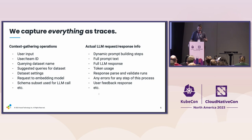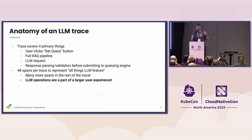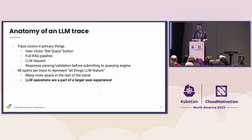It's a lot of data, but it's really important because every single one of these things is part of the end user experience, and every one of them directly influences the behavior of the large language model. If we want to systematically understand how this model is actually doing out in the real world, we have to capture this kind of data — otherwise we're going to be blind as to why it's actually doing what it's doing. There are four primary things: the user clicks Get Query, a RAG pipeline gathers context, we make a request to OpenAI, then we parse and validate the data and submit to our querying engine. That whole thing is 48 spans inside of a trace.